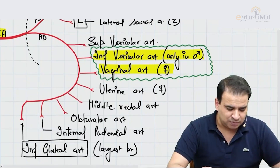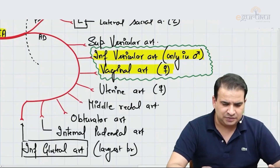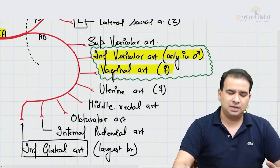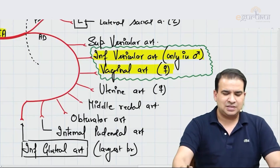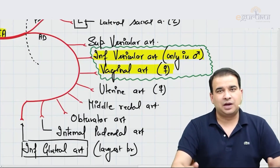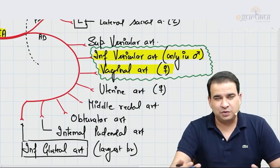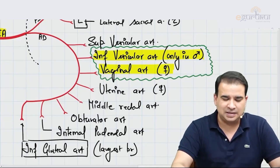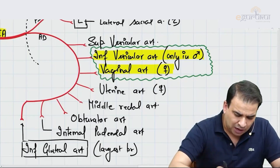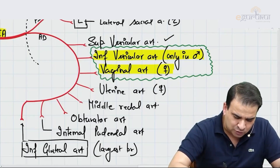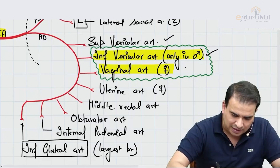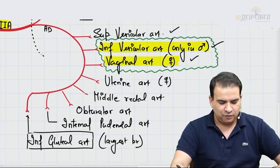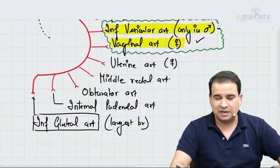This is commonly examined: which structures are branches of the anterior division versus the posterior division. Let us now discuss more about the superior vesicular, inferior vesicular, and vaginal arteries — these are important exam topics.